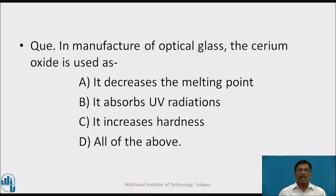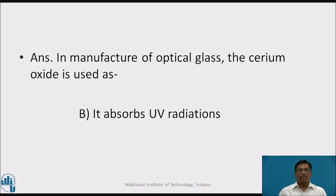Pause the video and answer this question. In the manufacture of optical glass, cerium oxide is used as: A. It decreases the melting point. B. It absorbs ultraviolet radiations. C. It increases hardness. D. All of the above. The answer for the question is B — it absorbs ultraviolet radiations.